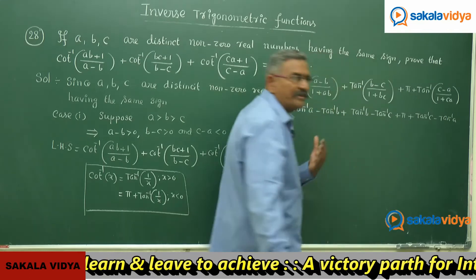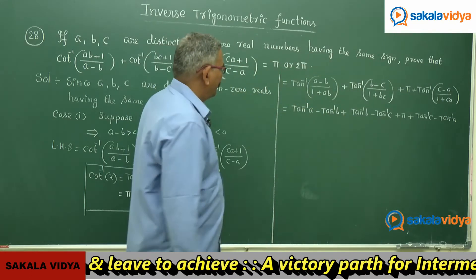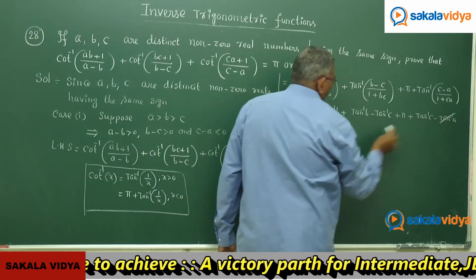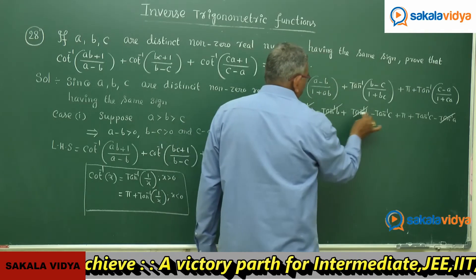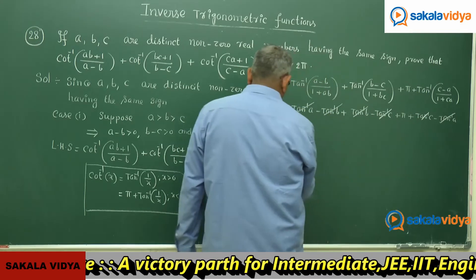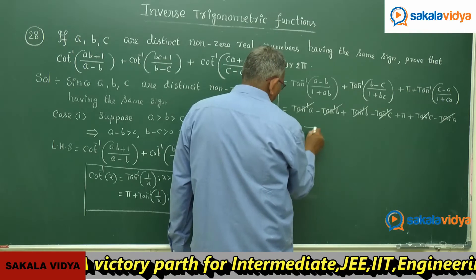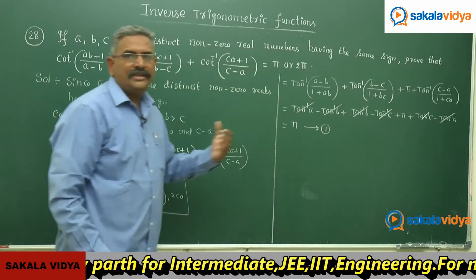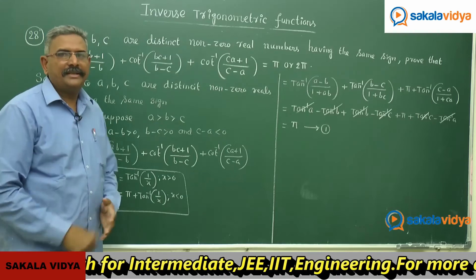Simplifying, tan inverse A cancels with −tan inverse A, tan inverse B cancels, and tan inverse C cancels, leaving just π. So in Case 1, the left-hand side equals π.